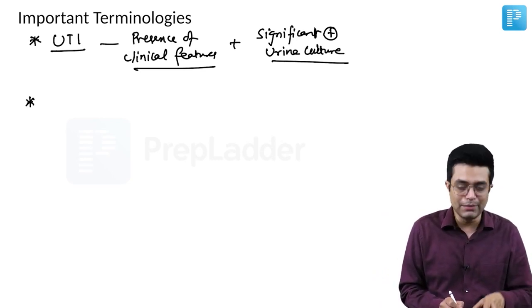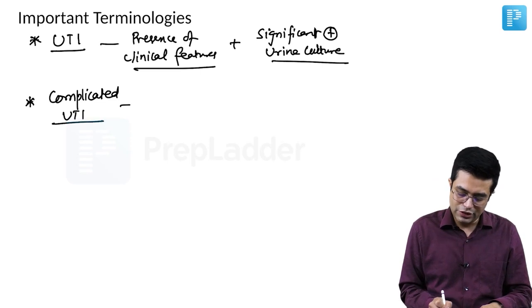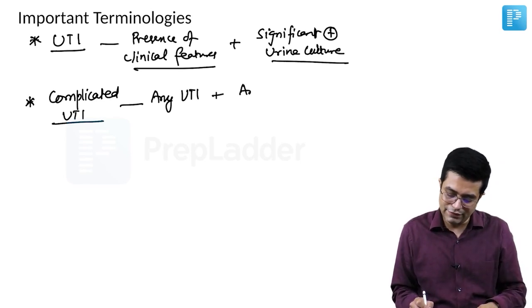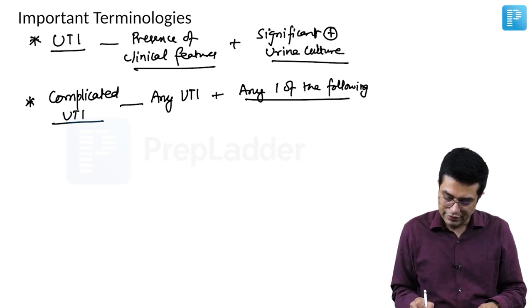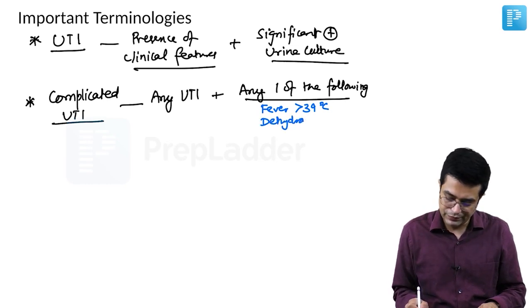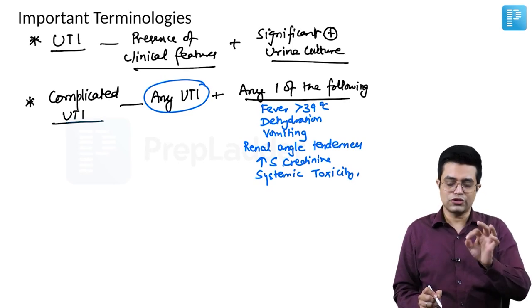There are two types of UTI which are seen, simple and complicated. What is complicated UTI? Any UTI as defined above, clinical features with significant bacteriuria or significant positive urine culture plus any one of the following is called as complicated UTI. Which are the features? If the child has fever more than 39 degrees Celsius, high grade fever; if the child has dehydration; if the child has vomiting; if the child has renal angle tenderness which will indicate the presence of pyelonephritis; if the child has raised serum creatinine; or if there are features of systemic toxicity. These are the six features. If any one of them or more are present with UTI, we call it as complicated UTI.